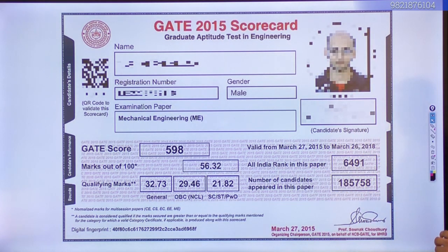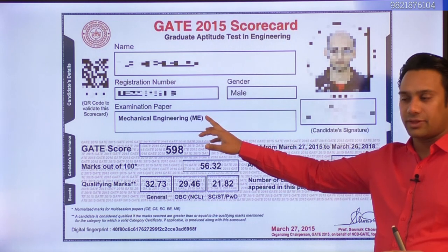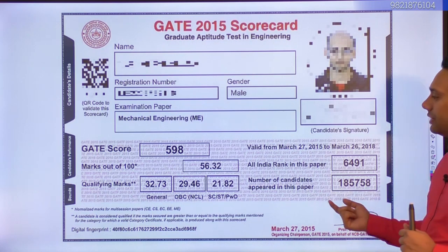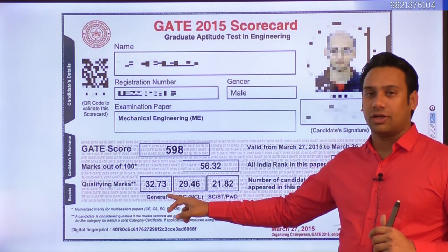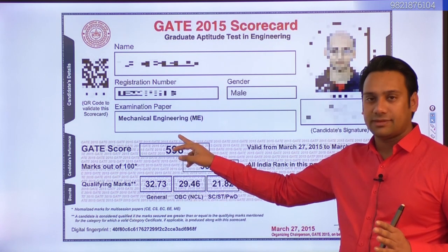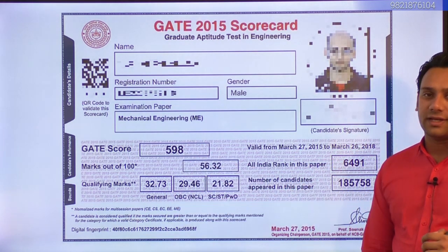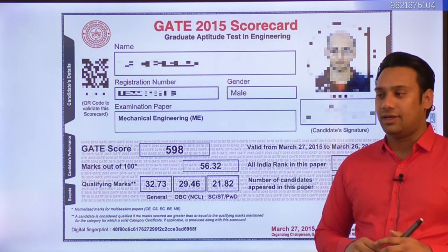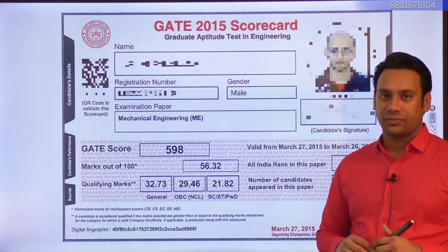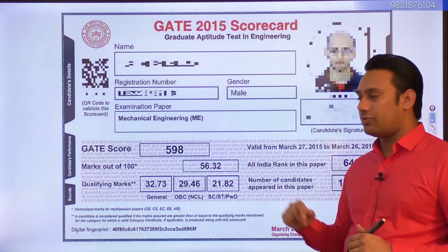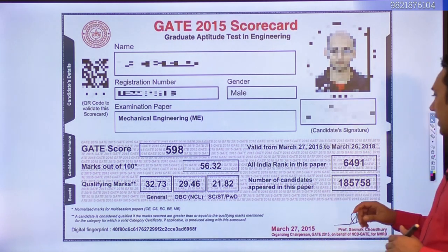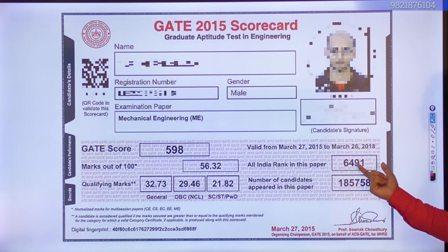The scorecard shows the number of candidates who appeared, qualifying marks for each category, and the candidate's own marks and All India Rank. For example, in mechanical discipline, qualifying marks for General is 32.73, OBC is 29.46, and SC/ST is approximately 21.82. A sample candidate scored 56.32 marks out of 100 and received All India Rank 6,491.